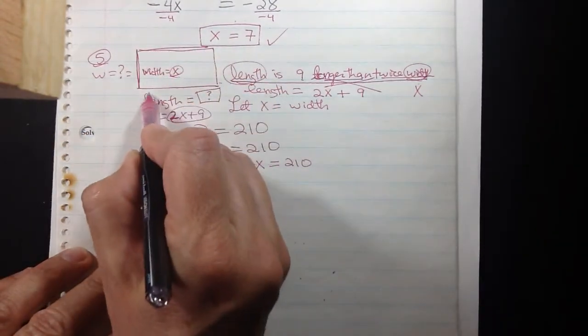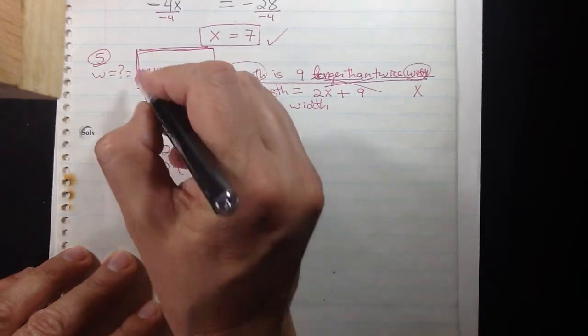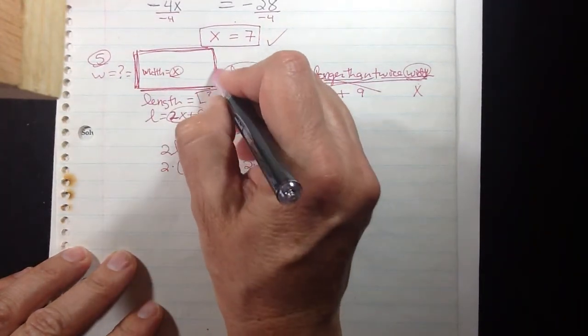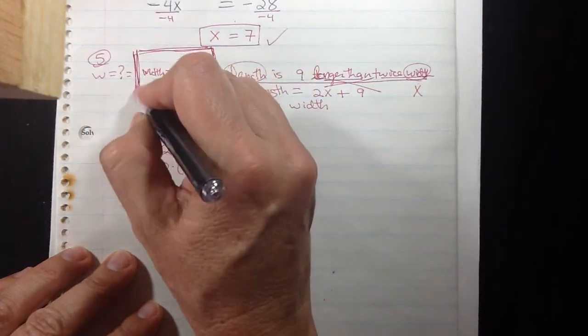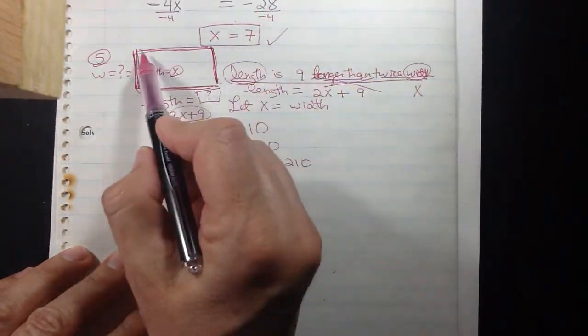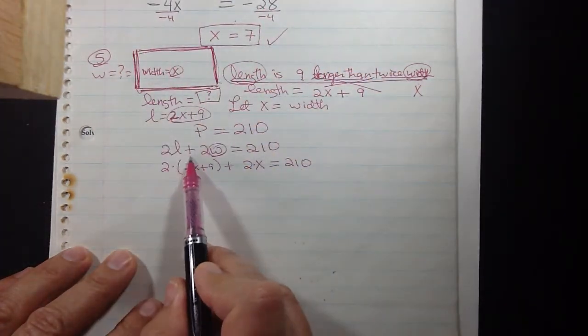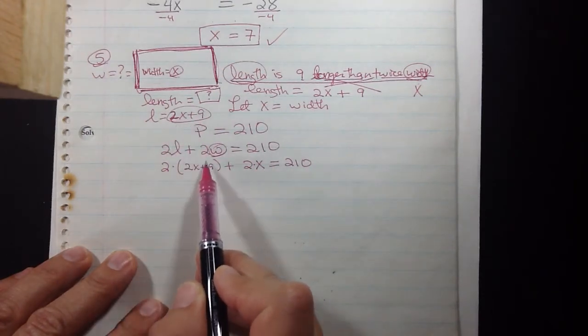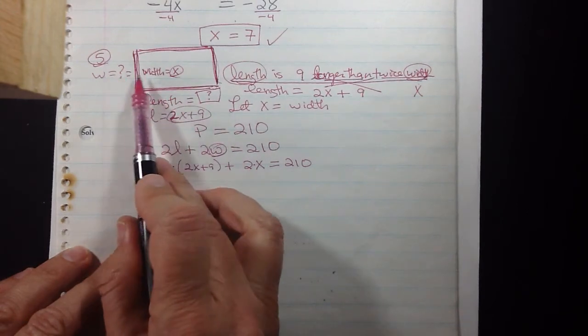Two times the length will be these two sides. When you take two times the width, there's one width, there's another width, so double width means we're counting both of these. So now we have the total perimeter, two lengths plus two widths. And length in terms of X is 2X plus 9, and 2 times a width, the width in terms of X is just exactly X.